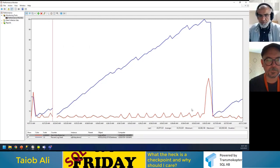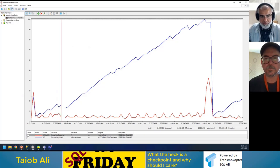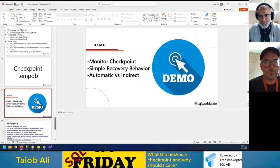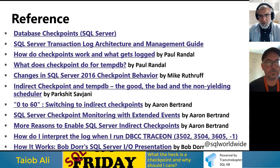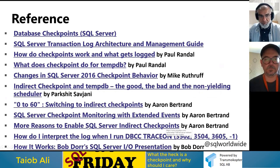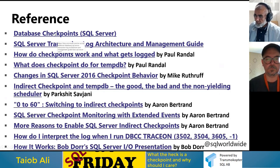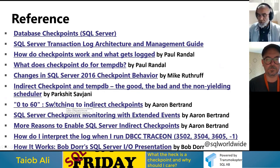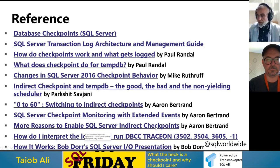Does this make sense? That's all I have. I do have some references, especially three articles from Aaron Bertrand — a long-time Data Platform MVP, now at Stack Exchange, previously at SQL Sentry and known for contributions to Plan Explorer. He did extensive testing with indirect checkpoint and covered many more reasons to enable it beyond just IO improvement. Read those blog posts if you want to enable indirect checkpoint or adjust the timings in your databases.